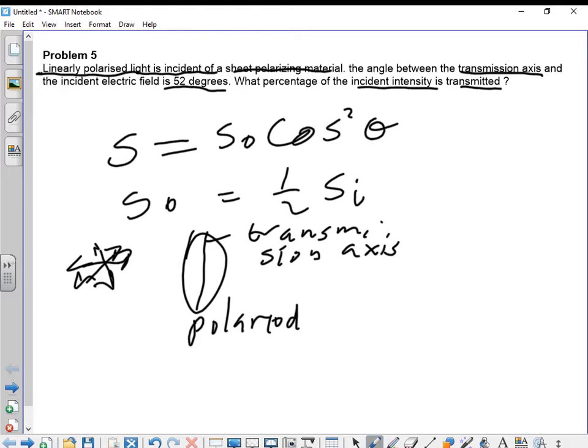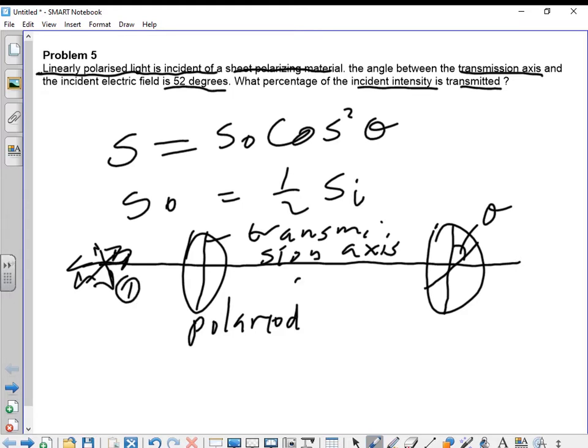And then you have an analyzer here with its transmission axis. We have the polarizing angle there, and you have the incident light passing through the polaroid.